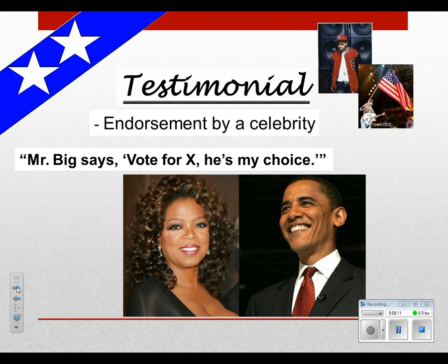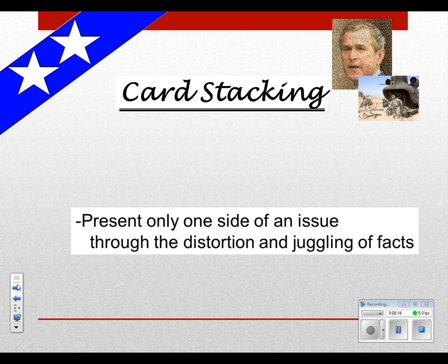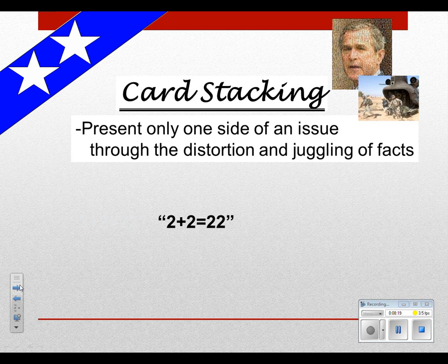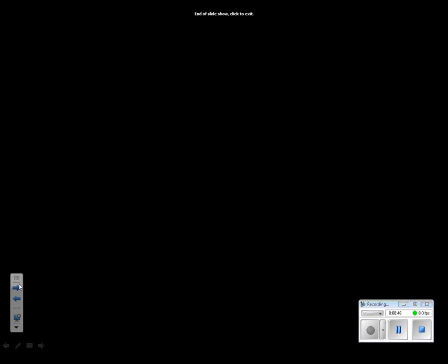Our final propaganda technique is card stacking, where you present one side of an issue and distort the truth by spinning the facts in your direction. It's not entirely true, but you convince people it's possible. The Daisy Girl ad is an example of card stacking — see if you can figure out how when you watch it. Thank you for listening to the CUNE Academy, where we are building responsible voters one video at a time. Email me if you have any questions, and enjoy watching the ads from the Living Room Candidate.